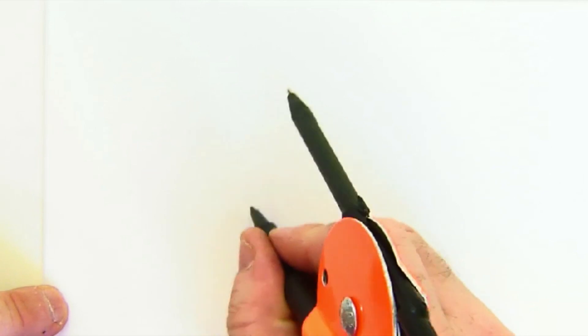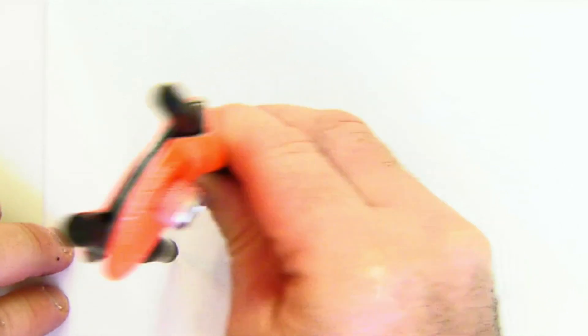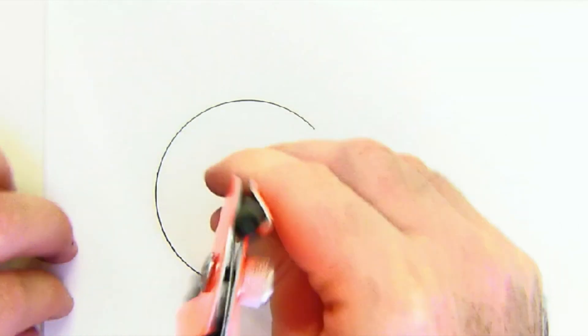All right, let's look at an inscribed equilateral triangle. So first, let's make our circle that we're going to inscribe our equilateral into.